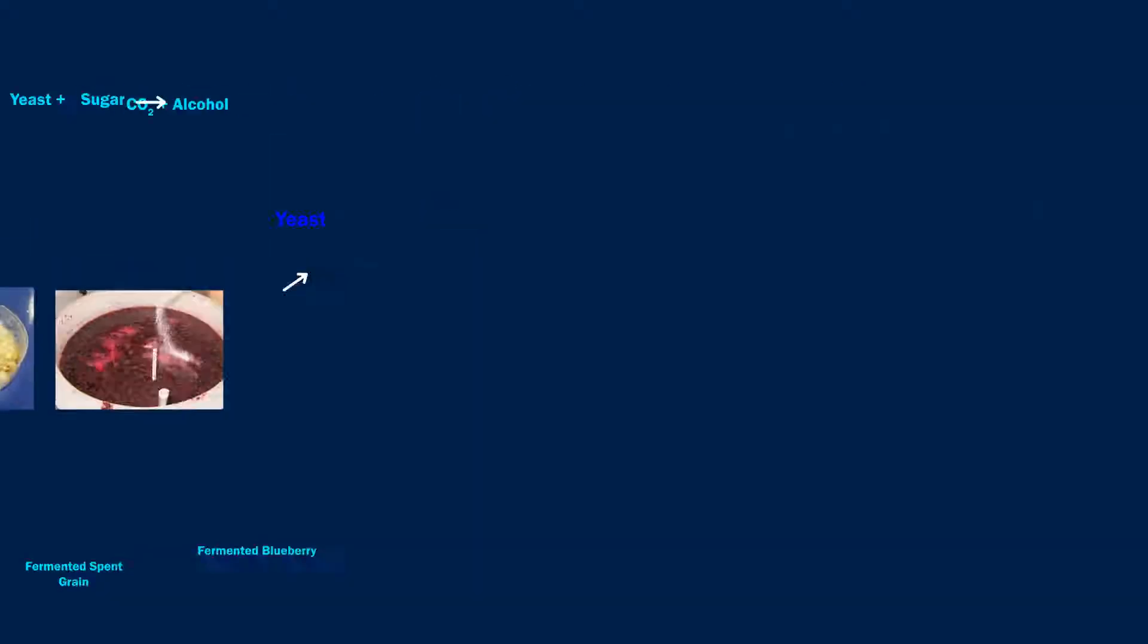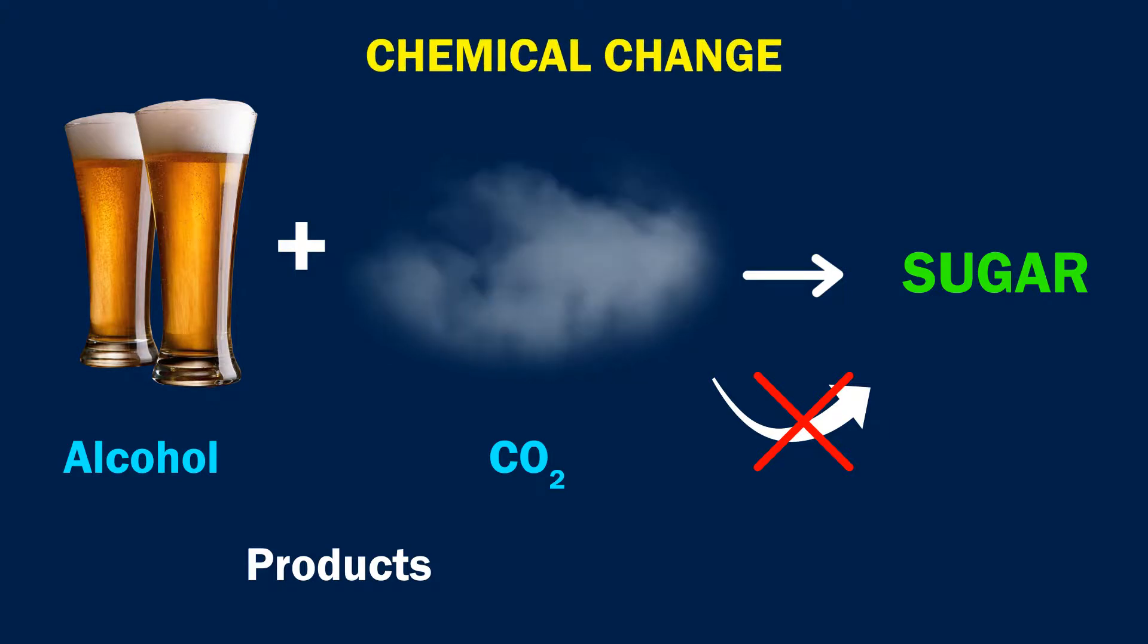You can see that products formed by this process are very much different from reactants and it is hard to convert alcohol and carbon dioxide back to sugar, and thus this process is a chemical change.